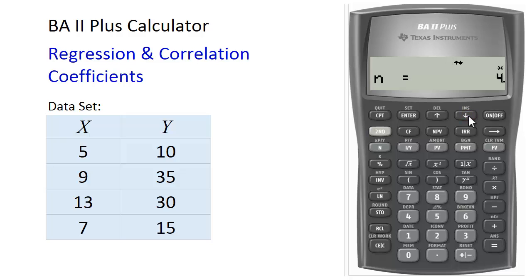N equals 4, indicating we entered 4 pairs of values. Scroll down. The mean of X is 8.5. The standard deviation of sample for X is 3.4157. Scroll down. If this were a population, then the population standard deviation for X is 2.958. Scroll down. It displays the same set of values for Y.